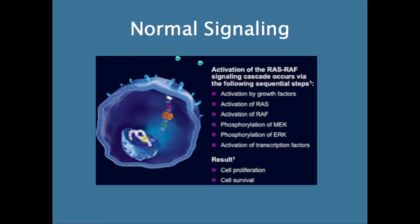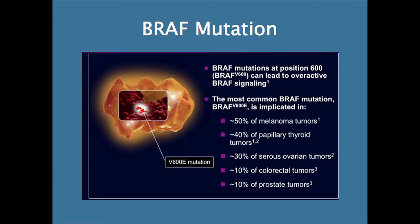RAF gets activated, then MEK gets activated, ERK gets activated, a signal is sent into the nucleus and the cell divides. But in cancers, RAF is mutated. So in melanoma, about 50% of melanomas have mutations in RAF. About 40% of papillary thyroid carcinomas. In ovarian cancers, colorectal cancers, and prostate cancers.